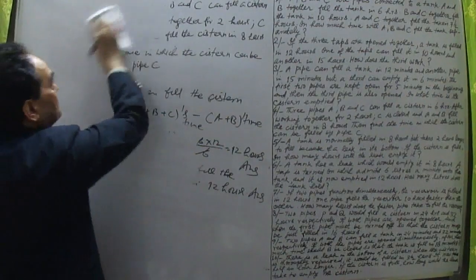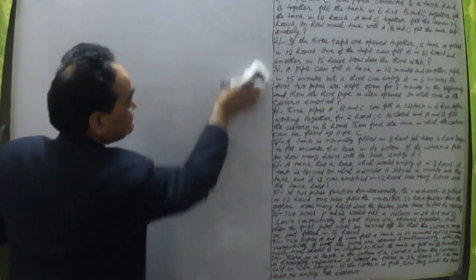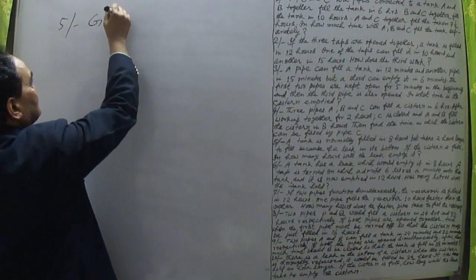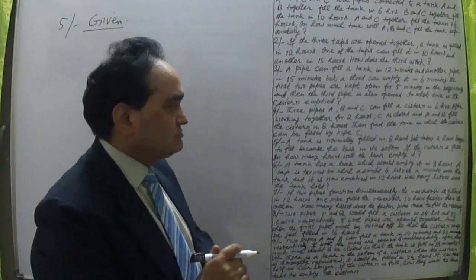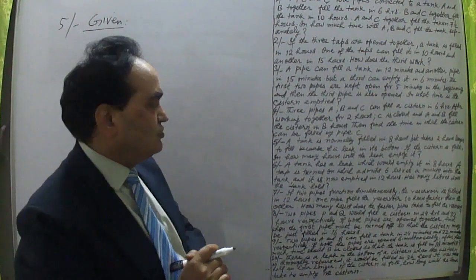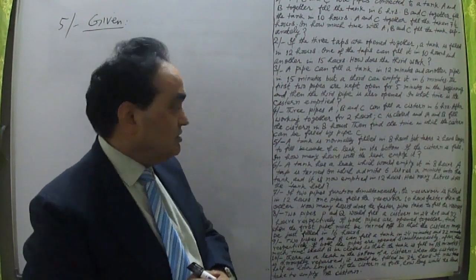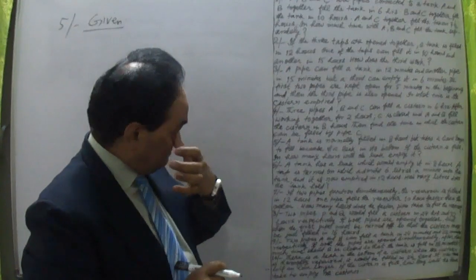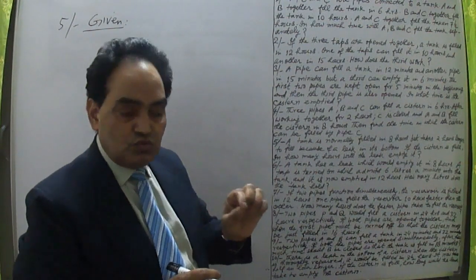Now let's move to question number five. A tank is normally filled in 8 hours but takes 2 hours longer to fill because of a leak — meaning it takes 10 hours with the leak. We need to find in how many hours the leak will empty the tank if the system is full.